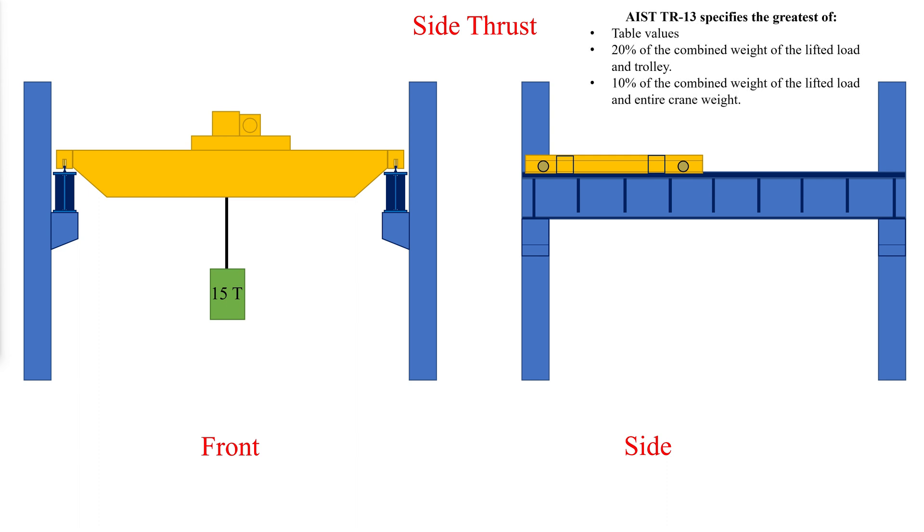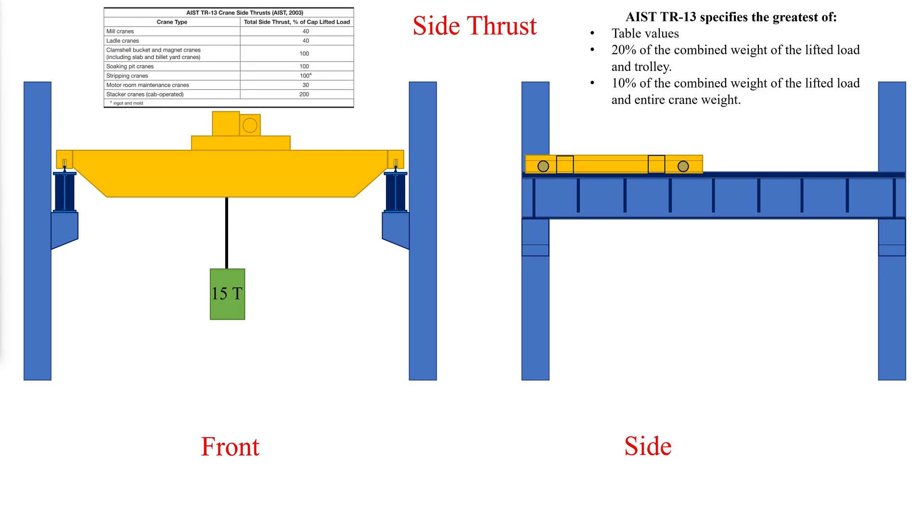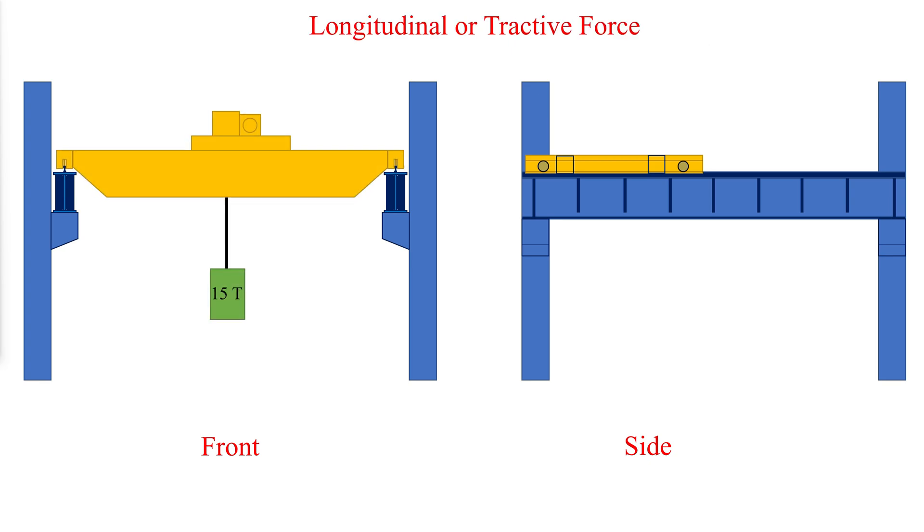AIST-TR-13 recommends using the greatest of the table values or 20% of the combined weight of the lifted load and trolley or 10% of the combined weight of the lifted load and the entire crane weight.